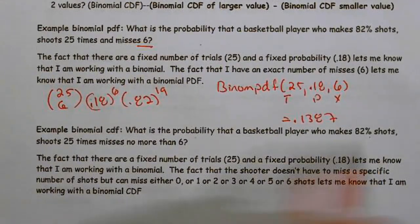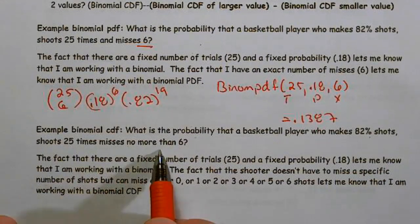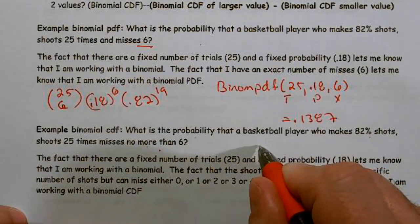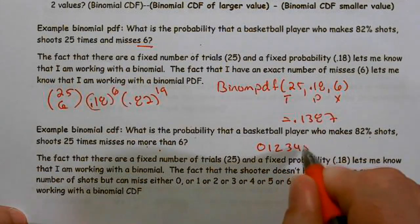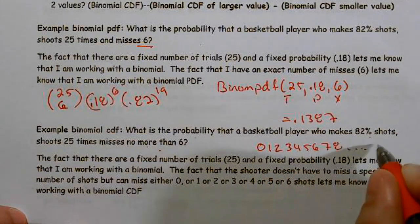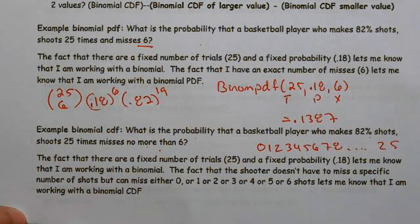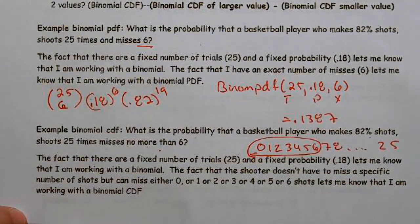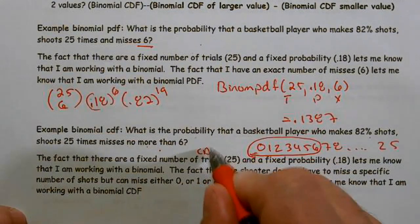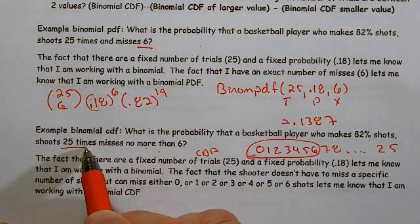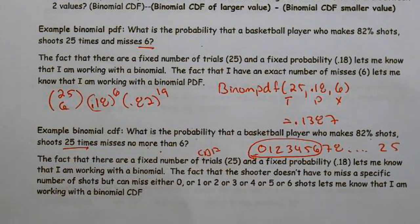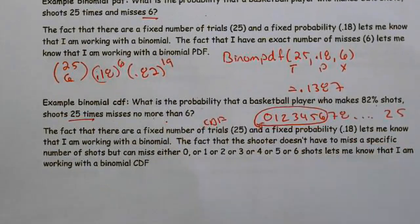What's the probability of a player who makes 82% of shots, shoots 25 times, and misses no more than six? We can miss 0, 1, 2, 3, 4, 5, 6, 7, 8 — all the way up to 25. In this case, I want to miss no more than six, so I can miss 0, 1, 2, 3, 4, 5, or 6. I circled more than one value, so this makes it a CDF. We have a fixed number of trials — 25 times — so this is a binomial CDF.